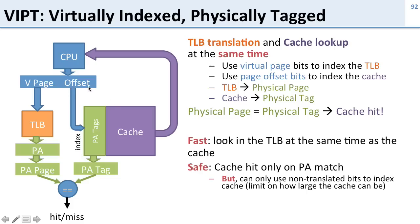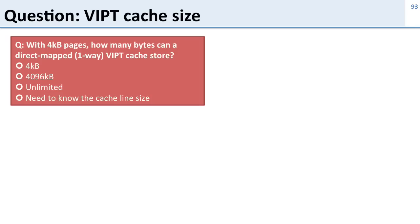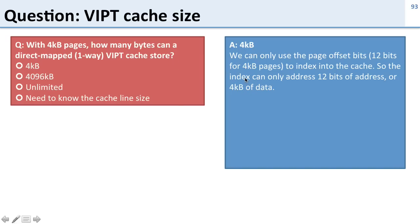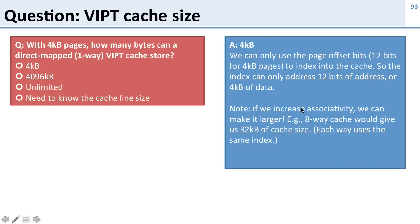There's a caveat: I can only use bits that aren't part of my virtual page number to index into the cache, so I can't make the cache infinitely large. For example, with four-kilobyte pages, I have 12 bits for the page offset, so a direct-mapped (one-way) VIPT cache can only store four kilobytes — not very good. However, by increasing associativity, we can do better. An eight-way cache can store eight times as much data, so 32 kilobytes. This is a real limitation of VIPT and one of the reasons you don't see very large level-one caches.